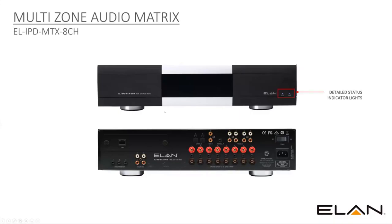Looking at the status indicator lights on the front: having two tri-colored lights means we can give greater granularity on what's going on with the unit. This is good for function and troubleshooting. There is a full matrix chart of what these lights indicate, which will be covered in the technical training.